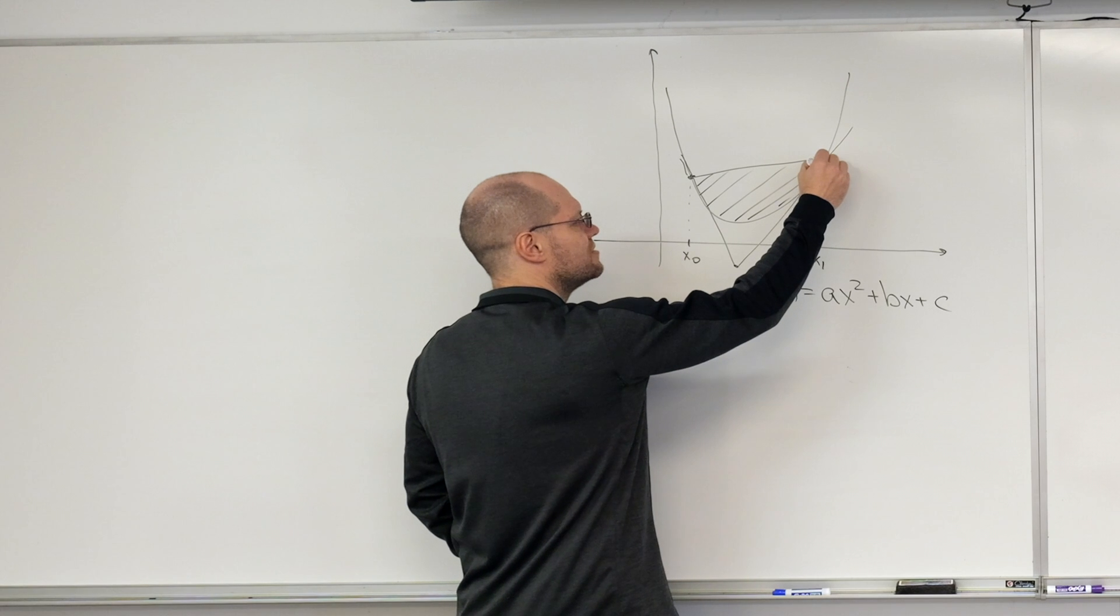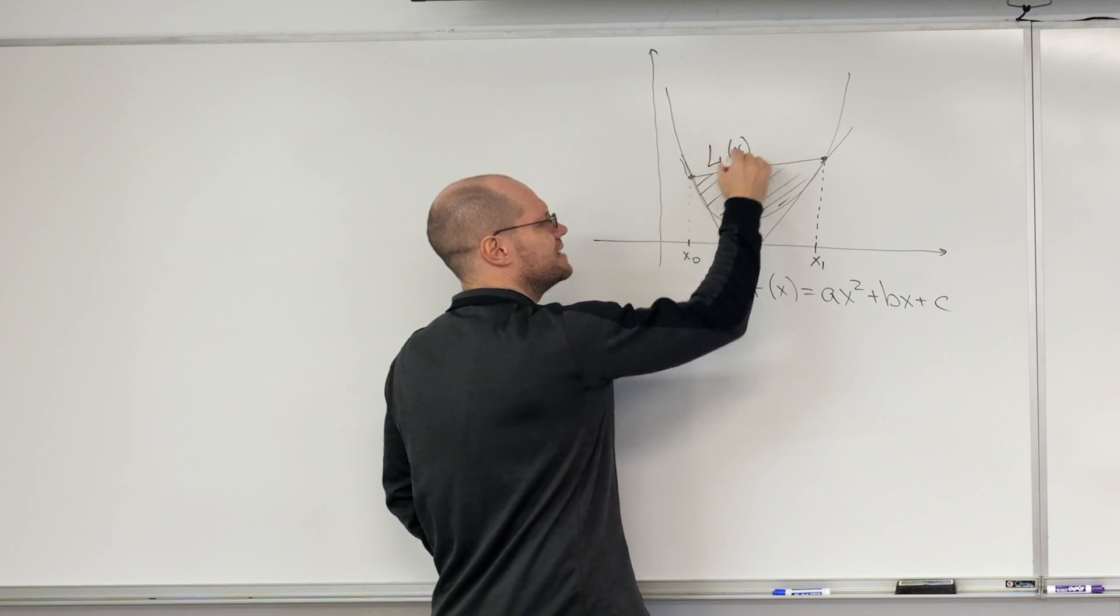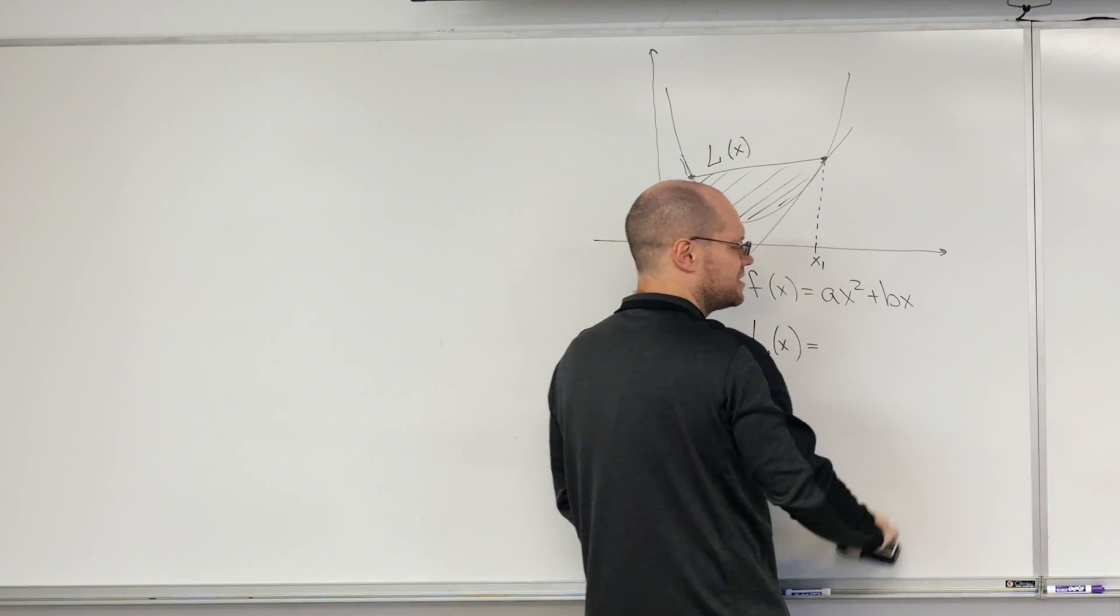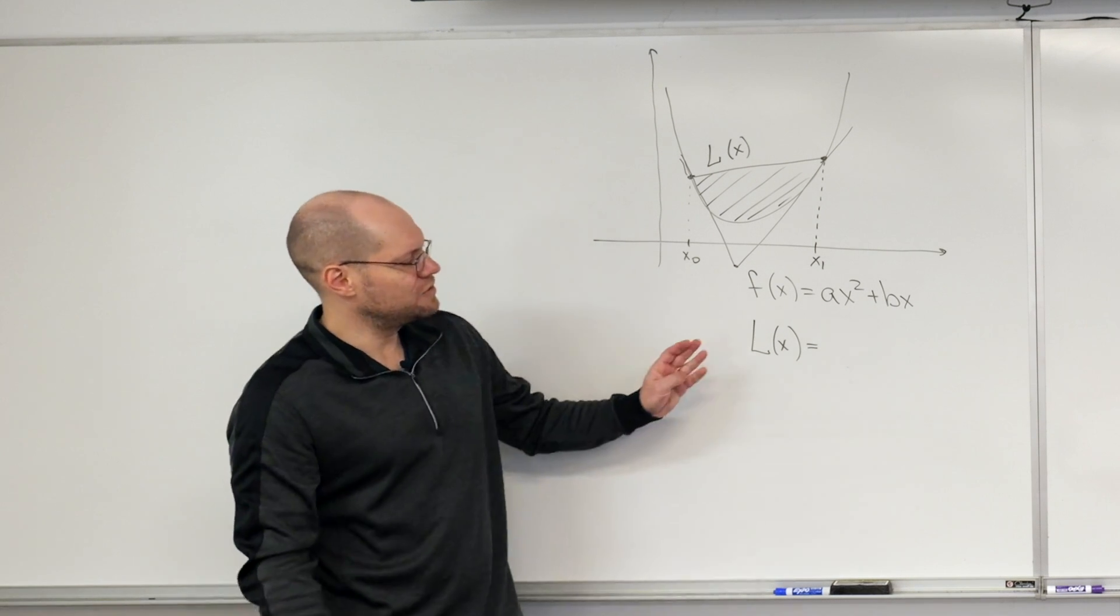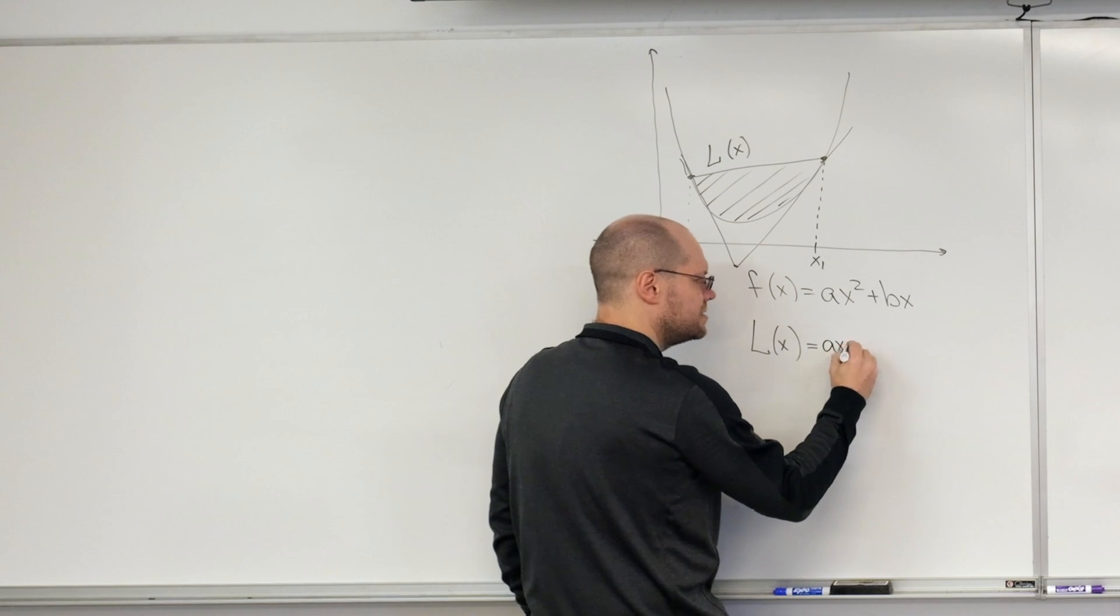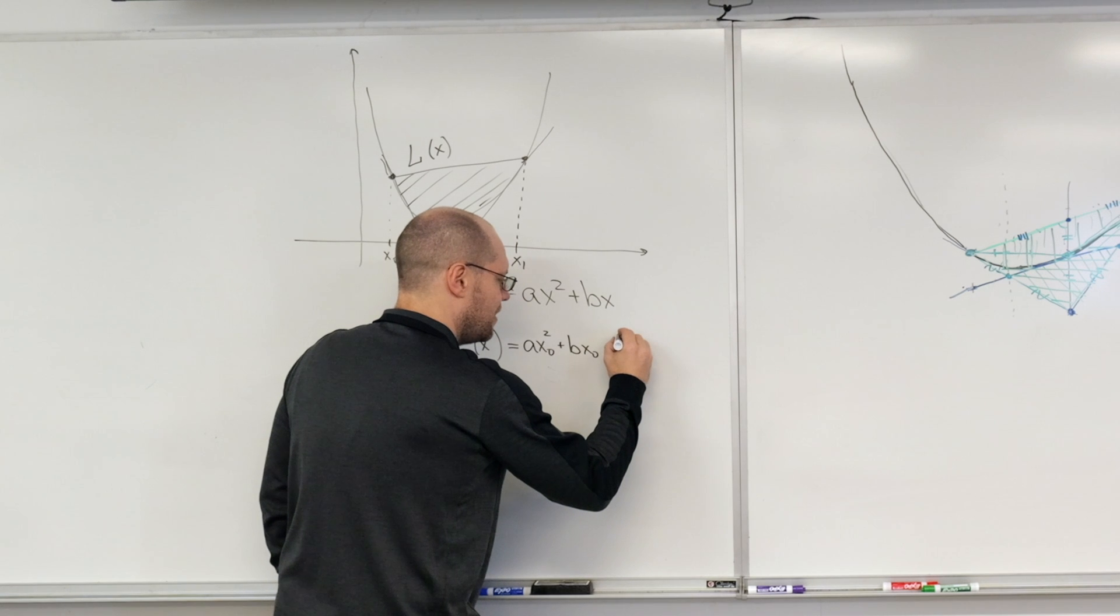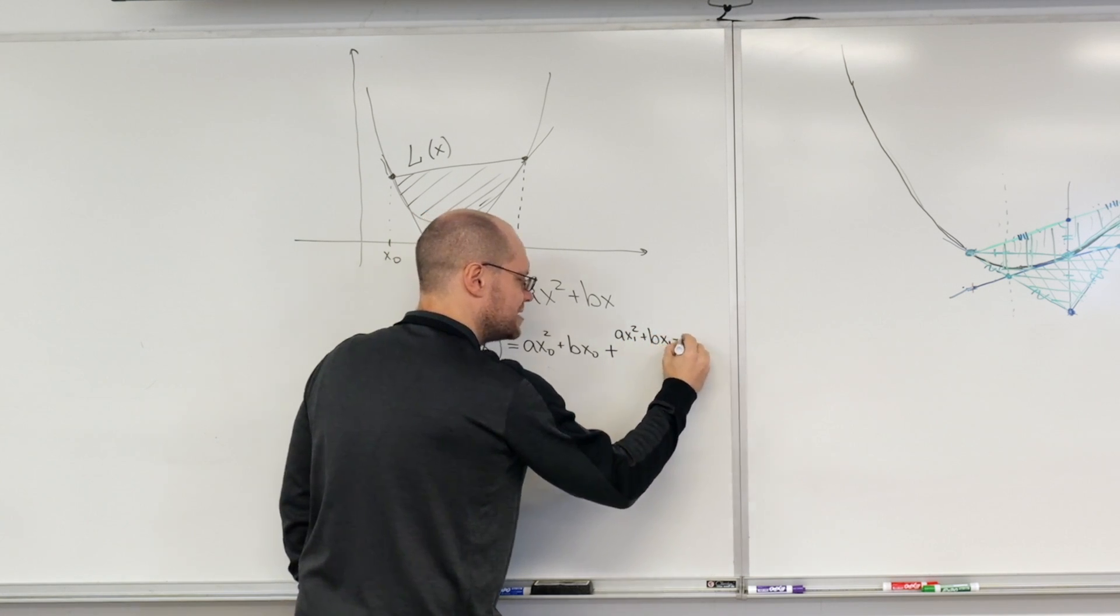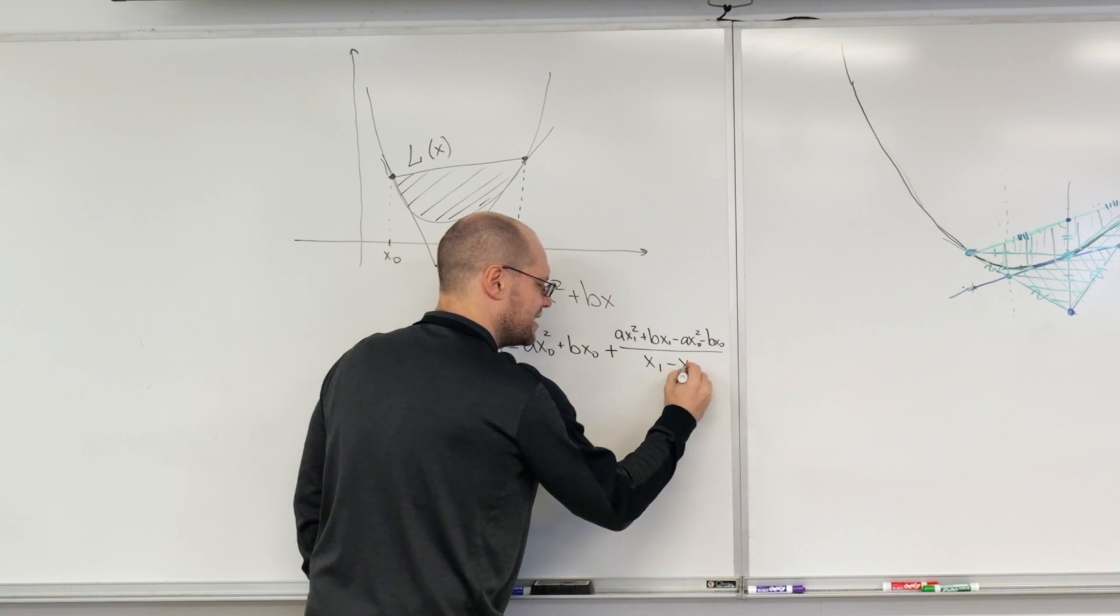So let's denote this as L of x, the equation for this chord. And the equation for this chord is, let's just ignore c because it doesn't matter. So let's just prove it for ax squared plus bx. So the equation is ax0 squared plus bx0, plus (ax1 squared plus bx1 minus ax0 squared minus bx0) divided by (x1 minus x0), times (x minus x0).